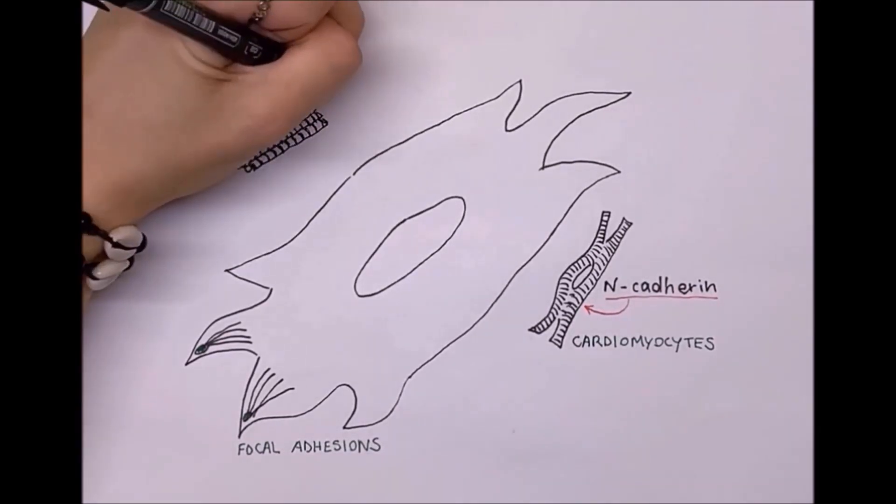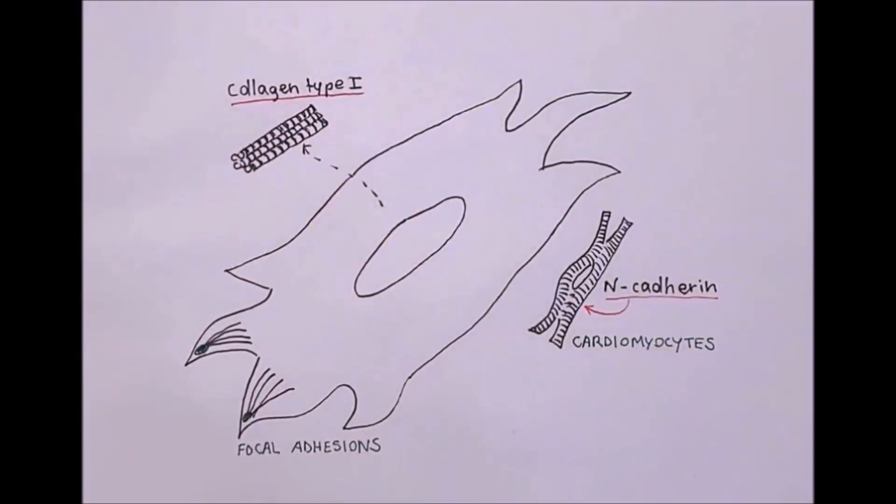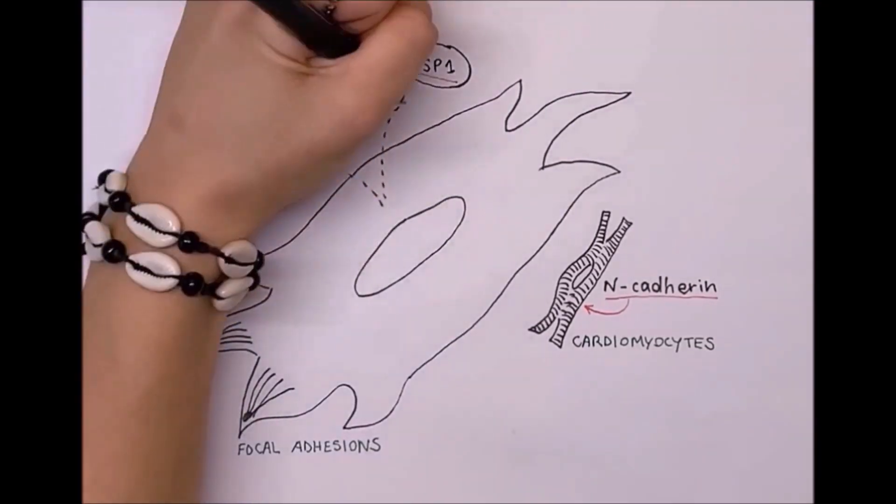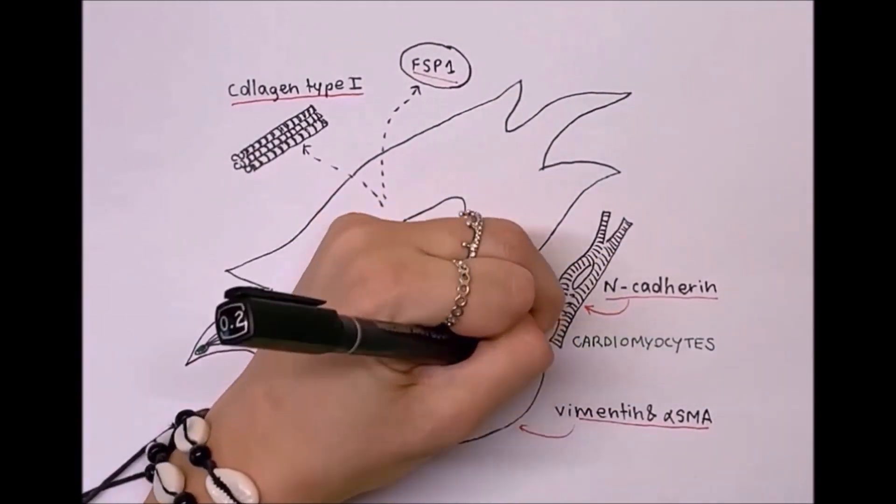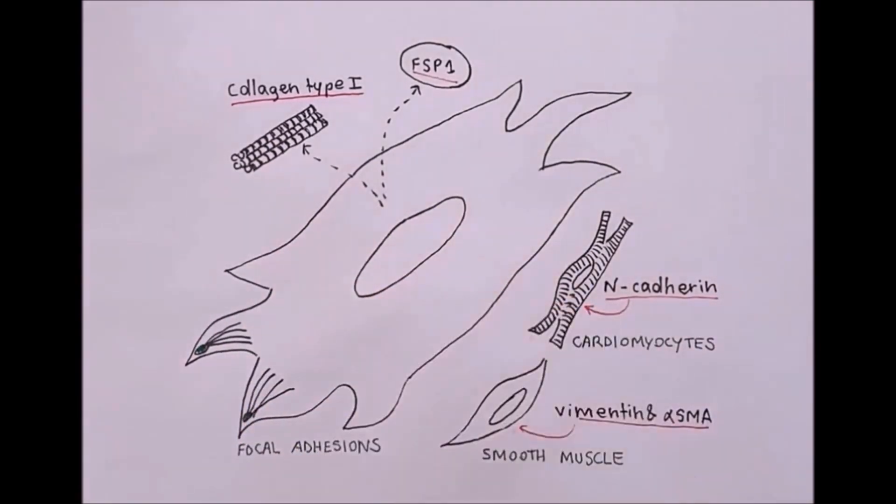When it comes to mesenchymal markers, the main one is N-cadherin, and we can find it in cardiomyocyte cell junctions. Collagen type 1, fibroblast-specific protein 1, vimentin, and alpha-smooth muscle protein are other mesenchymal markers, found also in smooth muscle cells.